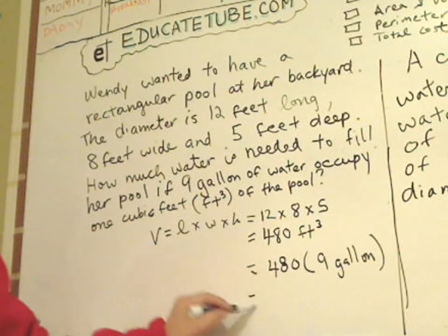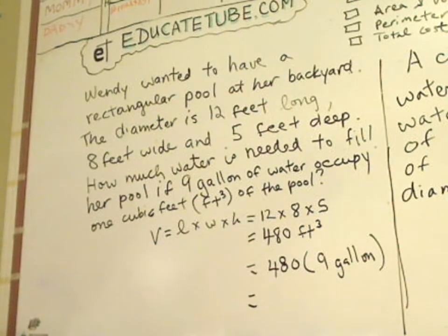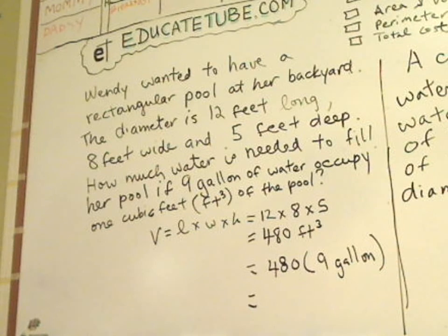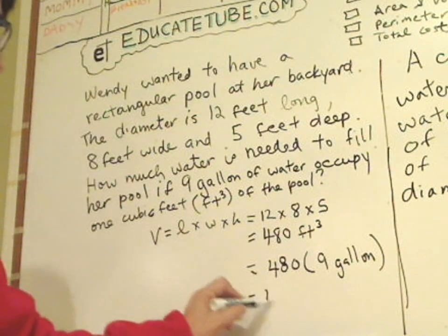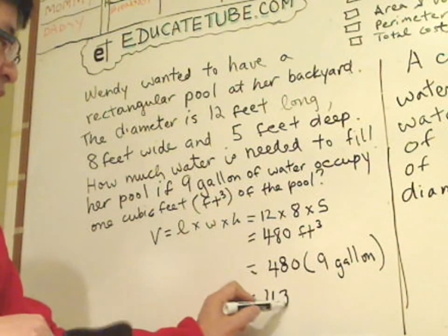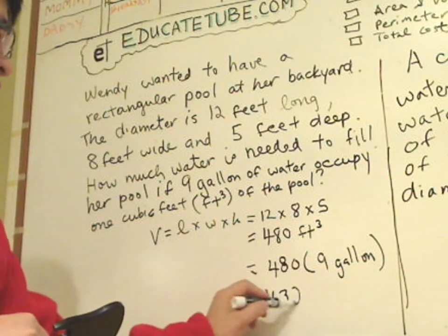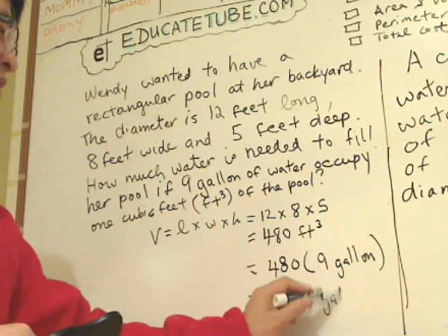And from that, let me see, my calculator will tell me 480 times 9. That means the pool would need 4,320 gallons of water.